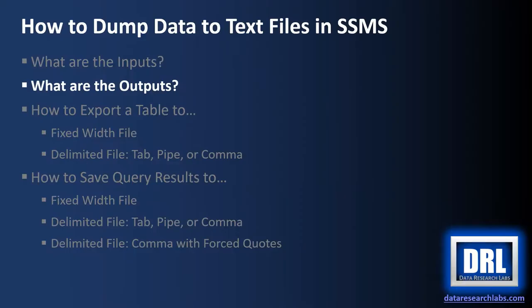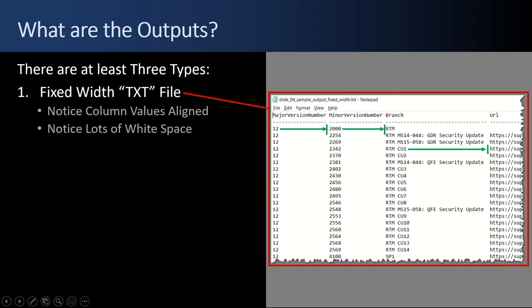Next up, what are the outputs? There are at least three types of output. The first is fixed width text files. Notice that the columns have the values aligned — straight lines vertically. White space is inserted to make sure that the values all line up. There is no delimiter; this column starts here and ends there, this column starts here and ends there.